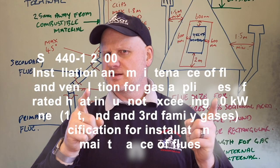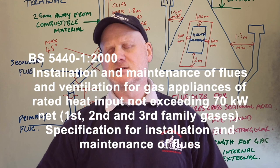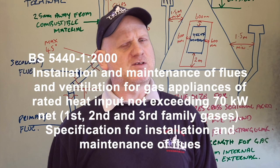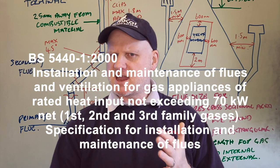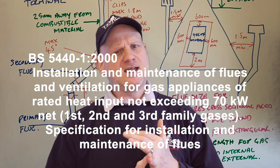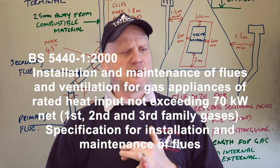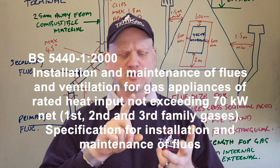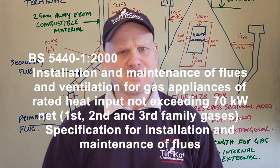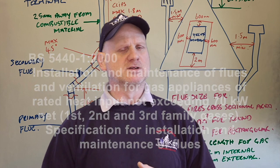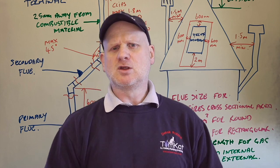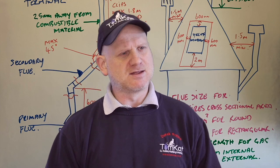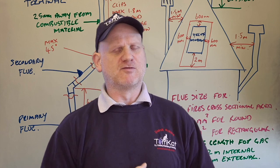According to the standards, we now classify flues as A, B, or C. A is flueless, B is open flued, and C is room sealed. So we're going to look at type B appliances — open flued.